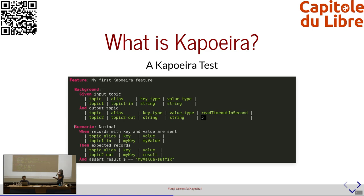On va voir un ou plusieurs scénarios. Ici, on a illustré un scénario nominal. On retrouve la syntaxe When/Then : quand j'envoie des records dans mes topics d'entrée — ici myKey et myValue — alors je m'attends à récupérer dans mon topic de sortie quelque chose avec toujours myKey, et je vais vérifier que, sur myValue, on a bien ajouté le suffixe. Voilà ce qu'est un test Capoeira.